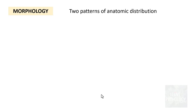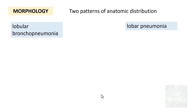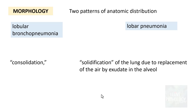When it comes to morphological features, we describe two different patterns: lobular or bronchopneumonia, and lobar pneumonia. At this point, you need to understand the word consolidation. Consolidation means solidification of the lung — normally the lung is aerated, but when air is replaced by exudate in the alveoli, it is referred to as consolidation.